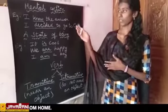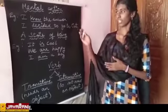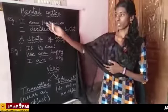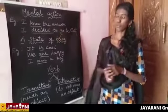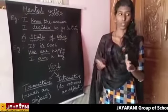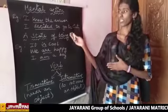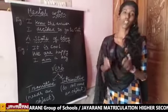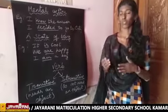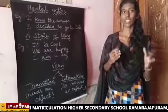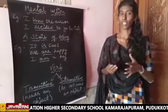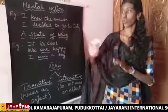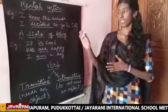For mental action, look at these examples: 'I know the answer' and 'I desire to go to Ooty.' Here, 'know' and 'desire' are both verbs, and both actions are done through our mind — not physically, without our legs and hands. This is said to be mental action.